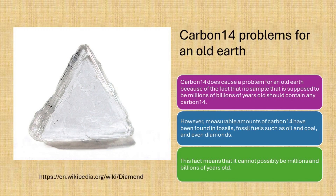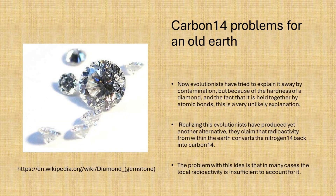Carbon-14 does cause a problem for an old Earth because of the fact that no sample that is supposed to be millions or billions of years old should contain any carbon-14. However, measurable amounts of carbon-14 have been found in fossils, fossil fuels such as oil and coal, and even diamonds. This fact means that these materials cannot possibly be millions or billions of years old.